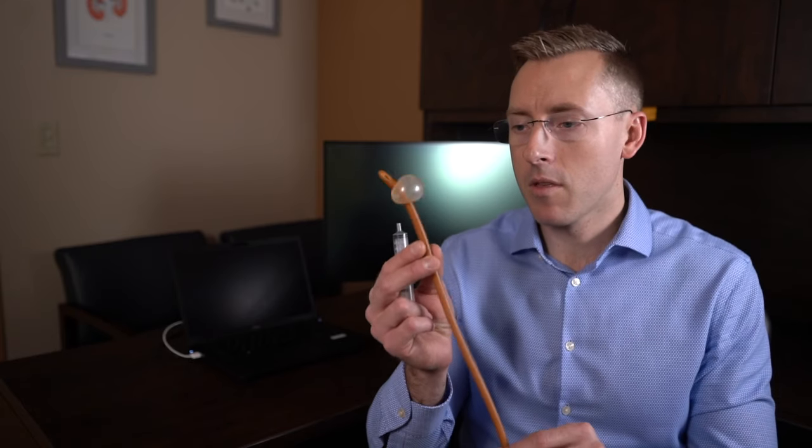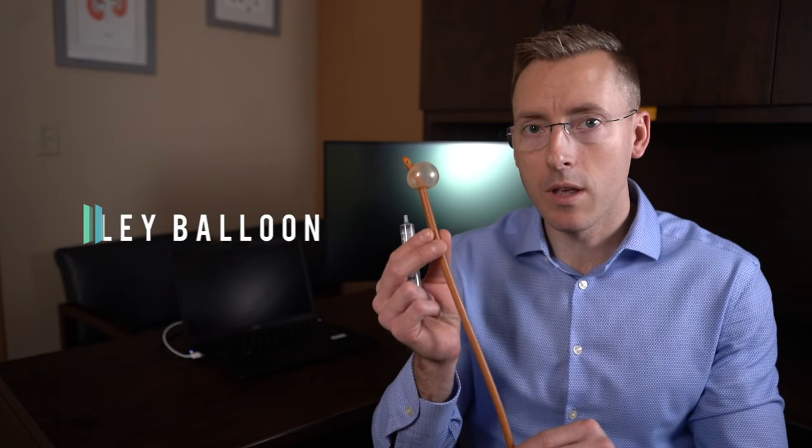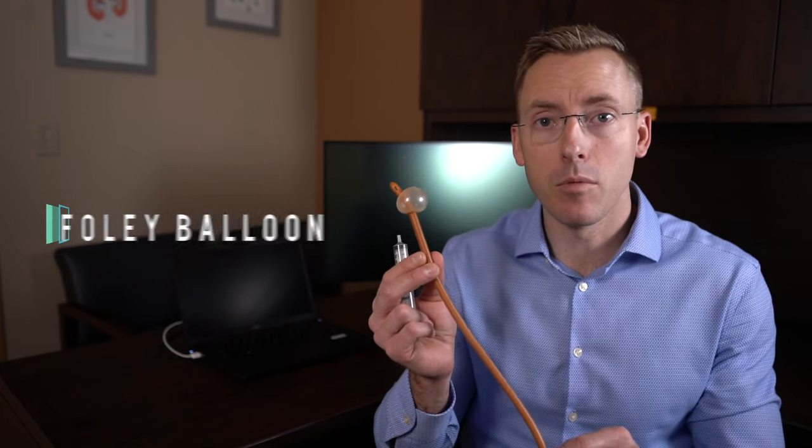The catheter has several different parts. Inside the body, this part, there's a balloon that holds the catheter in place and holds it in the bladder so the catheter does not get accidentally removed.